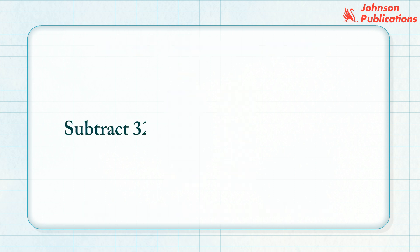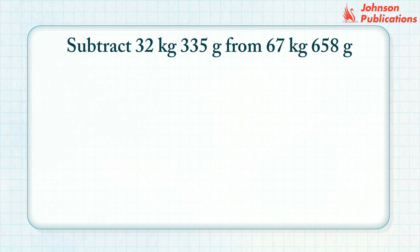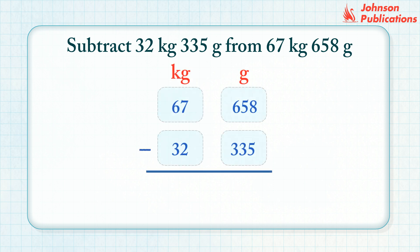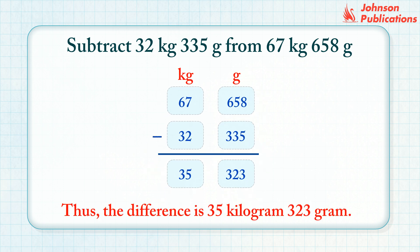Subtract 32 kilograms 335 grams from 67 kilograms 658 grams. Step 1: Arrange the kilograms and grams into their respective columns. Step 2: Subtract the grams column. Step 3: Subtract the kilograms column. Thus, the difference is 35 kilograms, 323 grams.